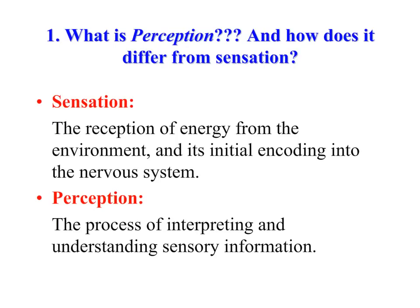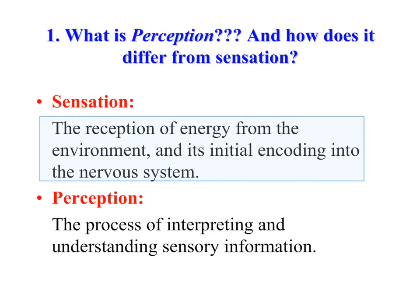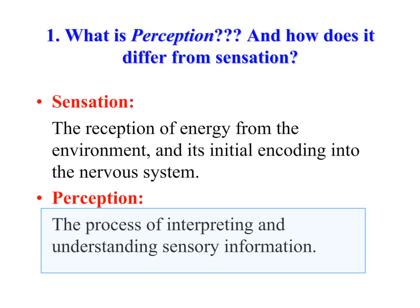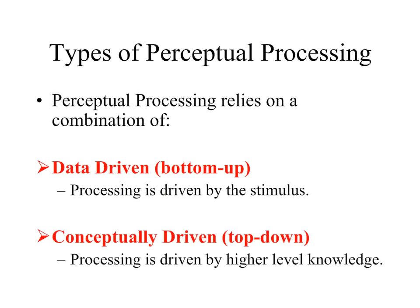Let's define sensation and perception. Sensation involves the reception of energy from the environment and its initial encoding into the nervous system. That differs from perception, where we define perception as the process of interpreting and understanding sensory information. We also need to define a couple more terms important in cognition and perceptual processing: data-driven, or bottom-up, and conceptually-driven, or top-down. Data-driven processing is driven by the stimulus — we take bits of information from the proximal stimulus, such as the image on the retina, and use that to guide our perceptual processing.